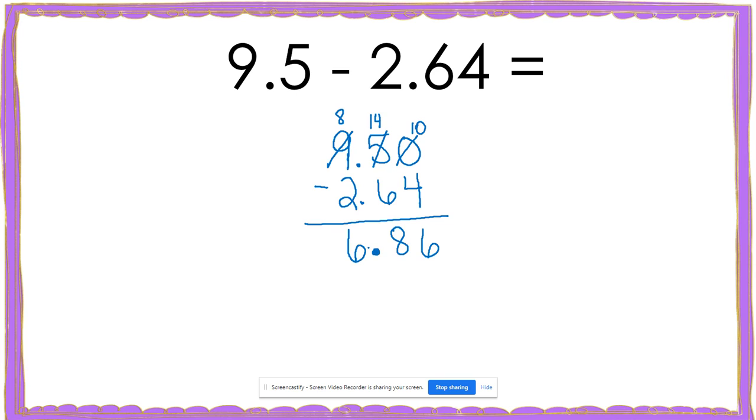And I'm going to bring my decimal down. So the difference of 9.5 and 2.64 is 6.86 or 6 and 86 hundredths.